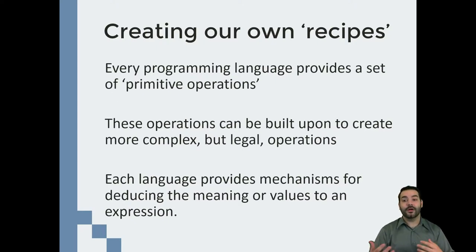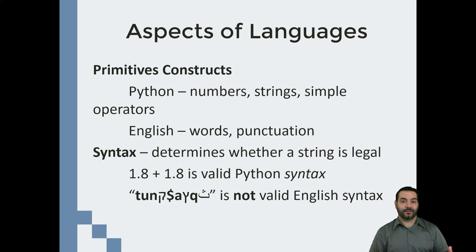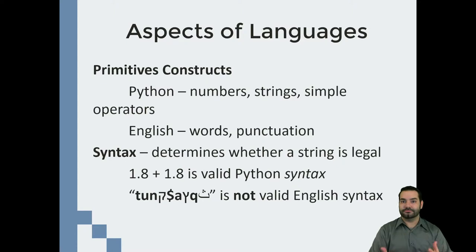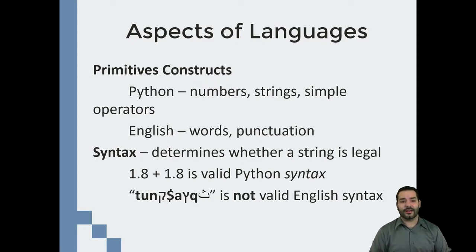Programming is no different — they all get broken down the same way. One of the things we have is something known as a primitive construct. English, for example, is broken down into words and punctuation. 'How are you doing?' — you know that's a question with a purpose. Python programming is on a similar avenue. The only difference is instead of punctuation, it works off of numbers, something we call strings, and operators. We'll talk about those operators in just a little bit.